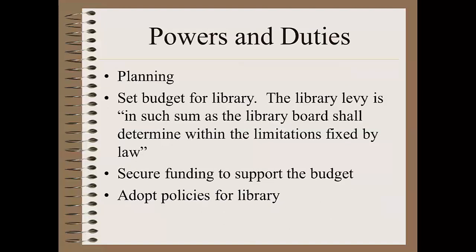One of the primary responsibilities of the board is, in cooperation with the library director, to develop a plan for library services. You should know what you want the library to be doing — you can call this a strategic plan or a long-range plan — but get a plan down in writing and use it as a guidepost. Then the board has the duty of setting the budget for the library. The board does that, not the city, and the city must levy the amount necessary to fund the budget within the limitations fixed by law. The law states that the tax levied is to be "in such sum as the library board shall determine within the limitations fixed by law."